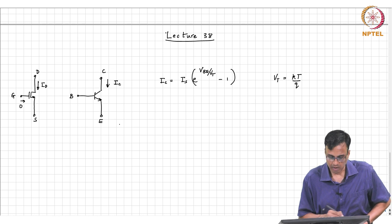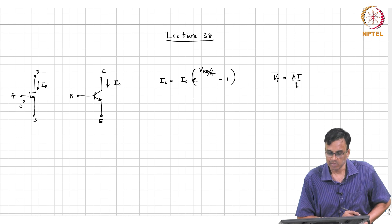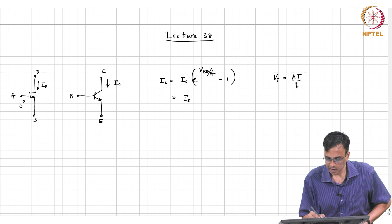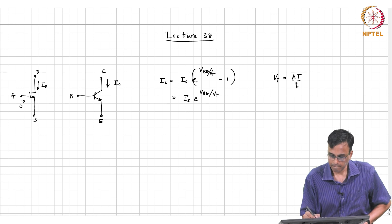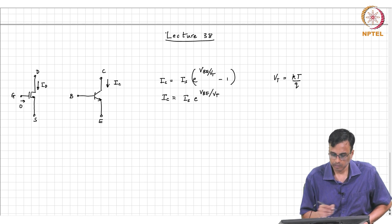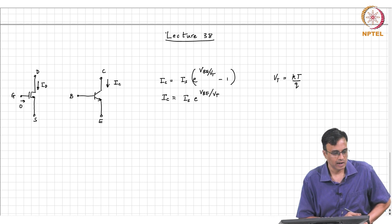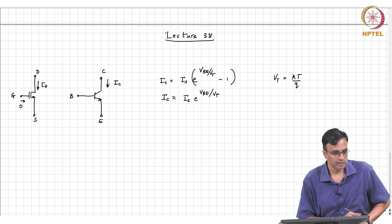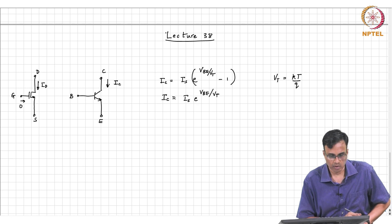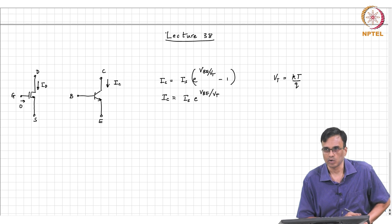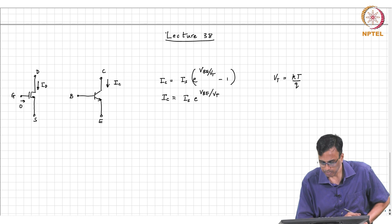For sufficiently large VBE, in excess of a few VT, this is approximately IS e to the VBE over VT. How this equation comes about is left to the device physics guys. They basically look into the device and do all sorts of fun stuff and finally come up with these equations, and these are all that we are concerned about.